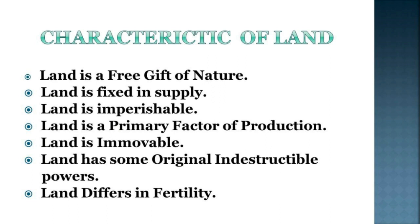Land is fixed and limited — it cannot be increased or decreased. Land is imperishable, meaning land is not destructible and cannot go out of existence. Land is a primary factor of production; in any kind of production process we start with land. For example, in agriculture, crops are produced on land. Land is immovable — it cannot be transported from one place to another. Land has some original indestructible power which man cannot destroy; its fertility may vary but it cannot be destroyed completely. Land also differs in fertility — one piece of land may produce more than another.